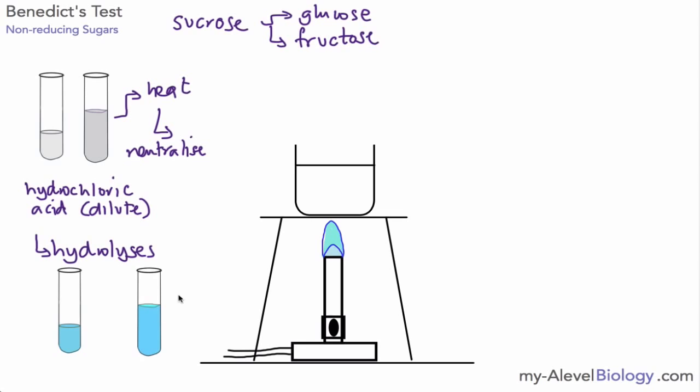And in the same way as before, we can then go ahead and put it in the water bath for a few minutes. If we then get our red precipitate, we know that we have the presence of reducing sugar. Or in fact, we had non-reducing sugar that was broken down into reducing sugars by this process.